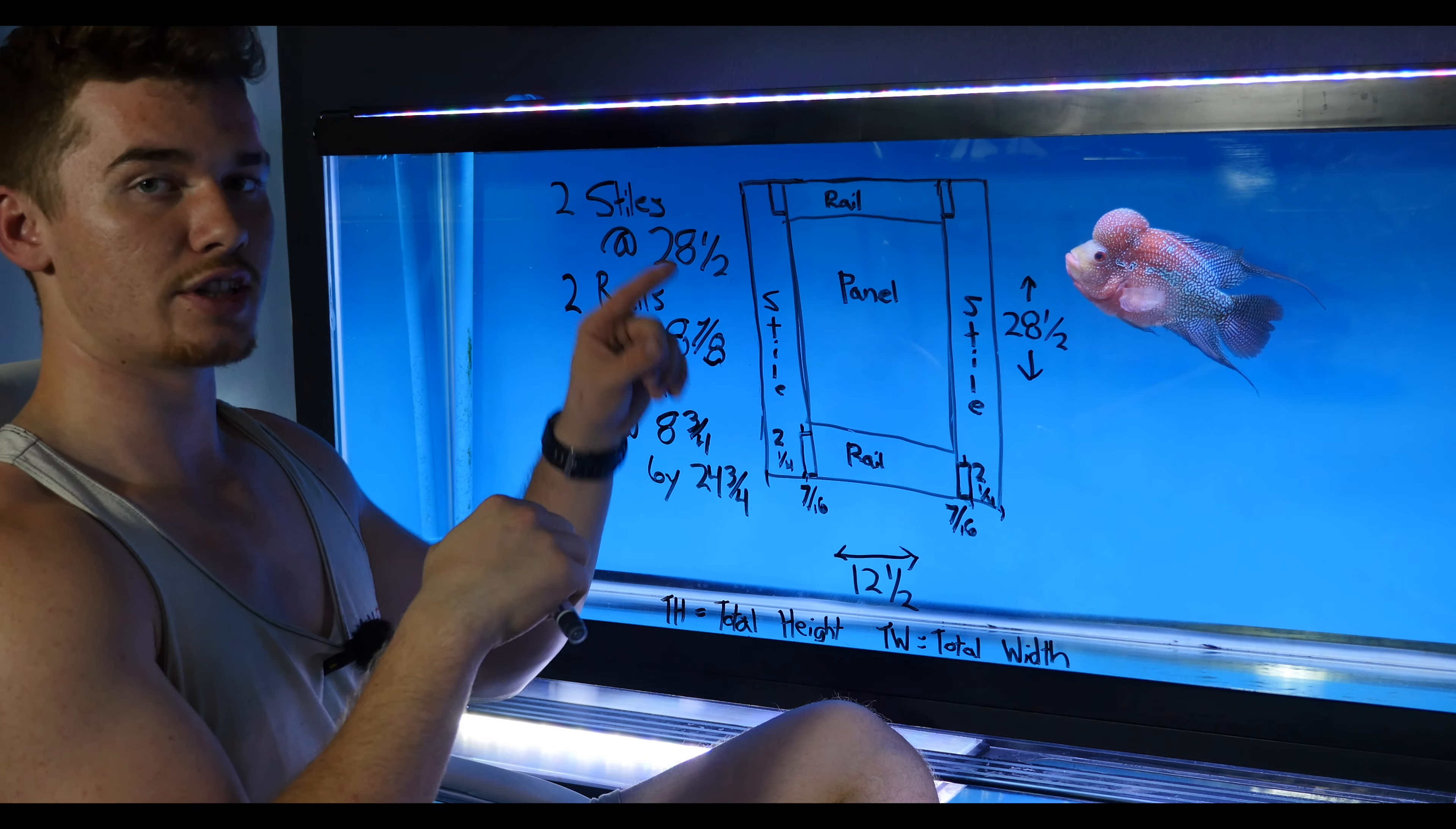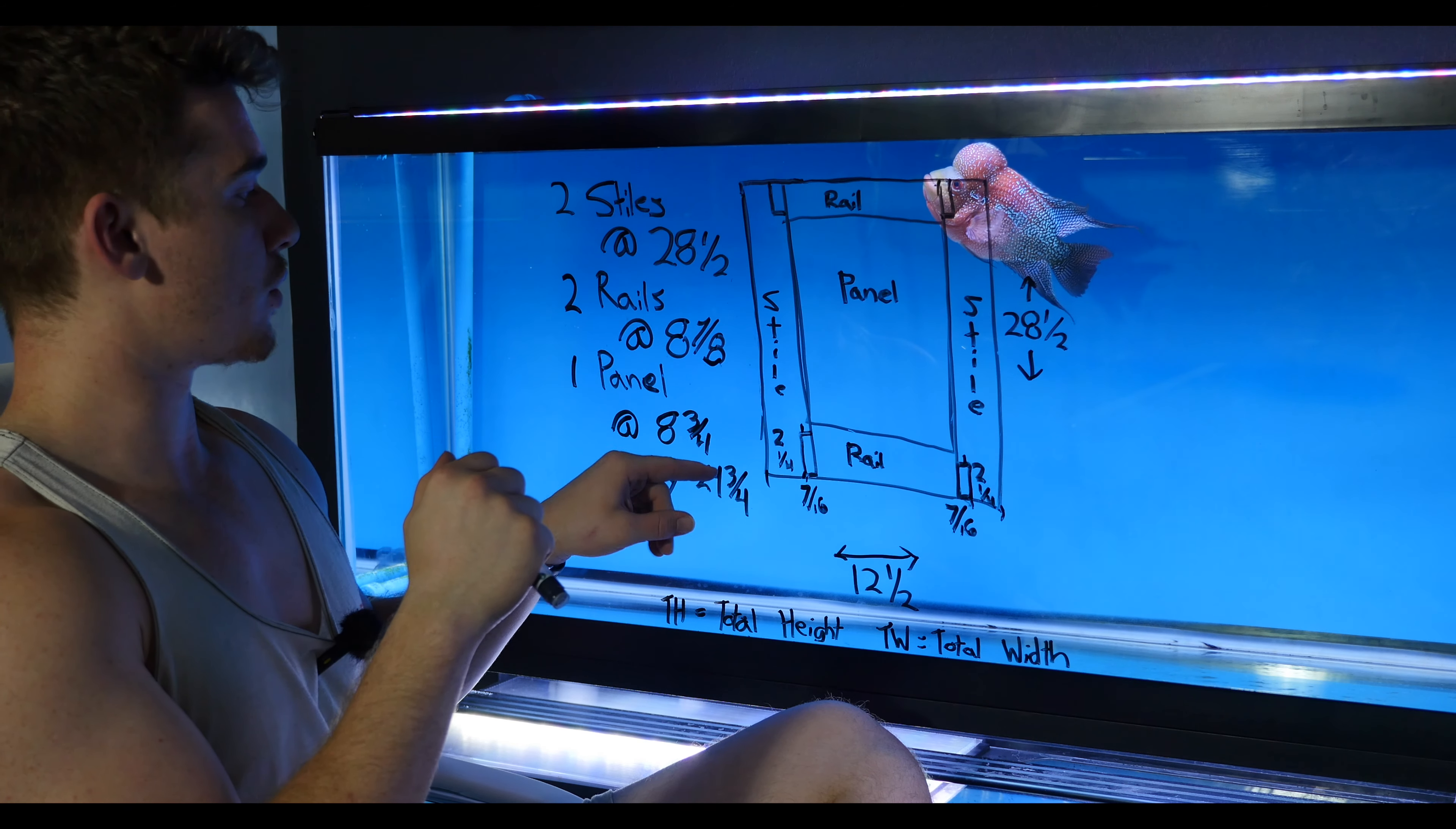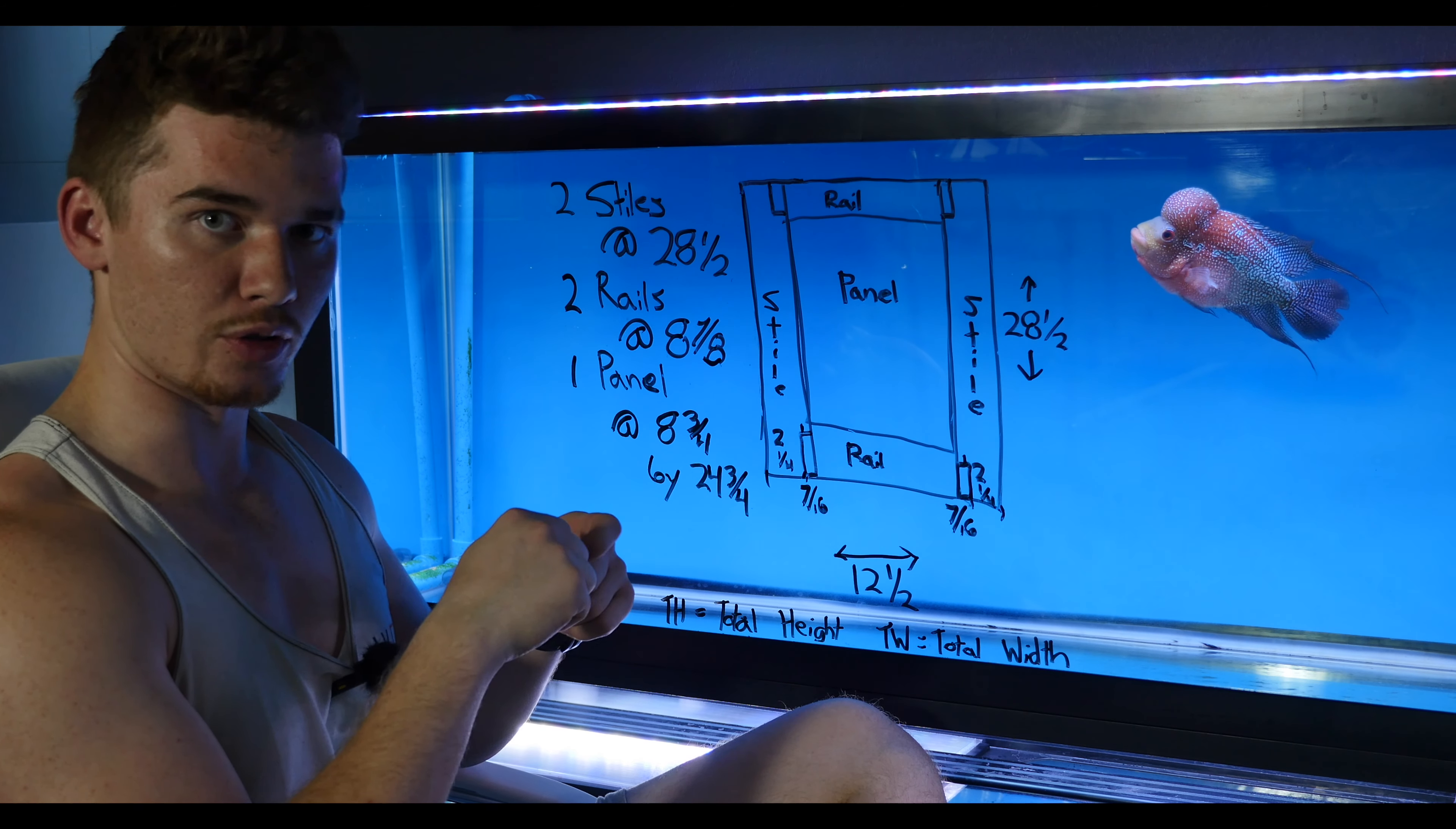The cool thing about those equations is that they can work for any door. So regardless of the height and the width, you just take the styles and make them the total height of the door, you take the rails and subtract three and five-eighths, and you take the panel and you subtract three and three-quarter from the total height and total width of the door, and that would give you your five-piece assembly material list. Let's build it.